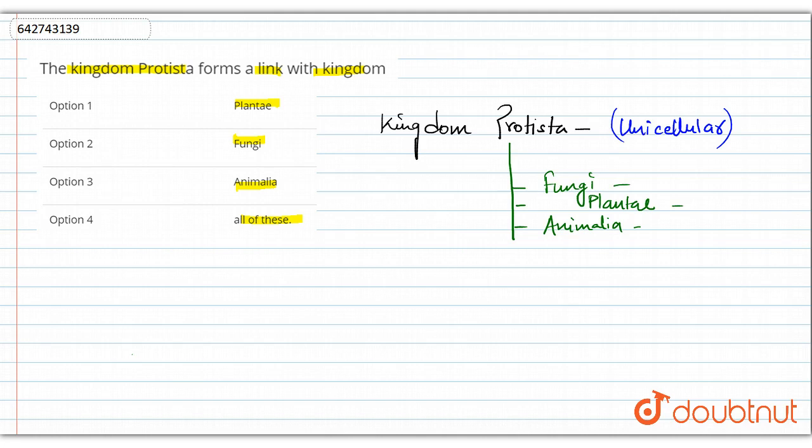For Fungi, we can take the example of slime molds. These slime molds are relatively similar to the fungi in their characteristic features, body structures, and the way they behave. Most of the fungi are saprophytic, so are the slime molds. Most fungi show symbiotic association, and so do the slime molds. This is why they are related to Fungi.